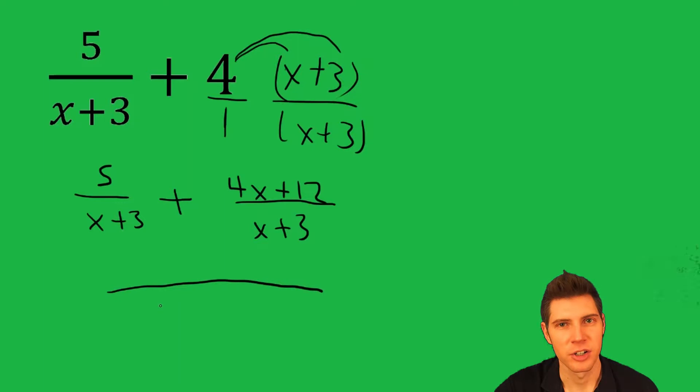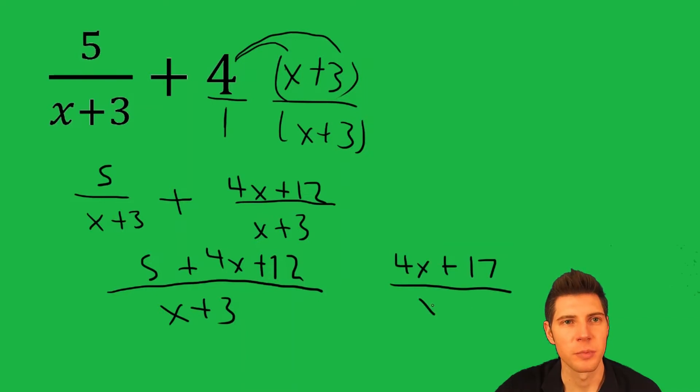So it's going to be one fraction all over x+3, and it's going to be 5+4x+12. Now we just combine like terms. 5+12 is 17, plus the 4x, over x+3.